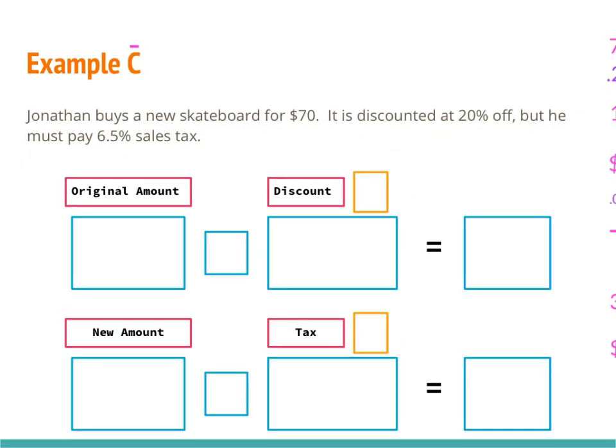In example C: Jonathan buys a new skateboard for $70. It is discounted at 20% off, but he must pay 6.5% sales tax. This is the scenario you'll most likely run into — even though it's on discount, you still pay sales tax. I've laid out six boxes: one set for the discount and one set for the tax. The original amount is $70, and since it's a discount, this is going to be a minus.